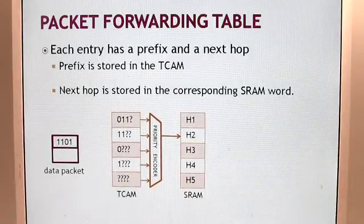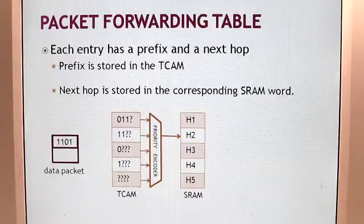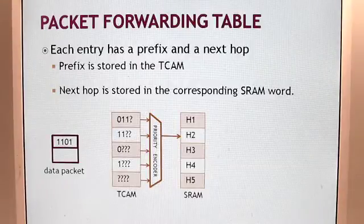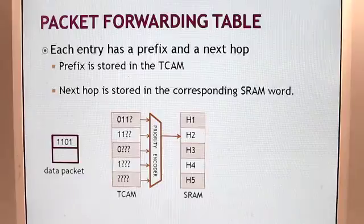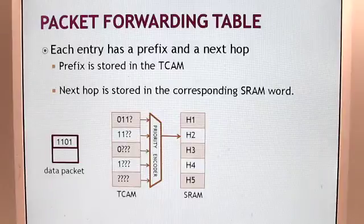Here is an example of a forwarding table with five prefixes in it. As a data packet comes in, the destination address on the data packet is used to lookup the TCAM. The priority encoder chooses the best match among multiple matches and uses the corresponding address to access the next hop from the SRAM.